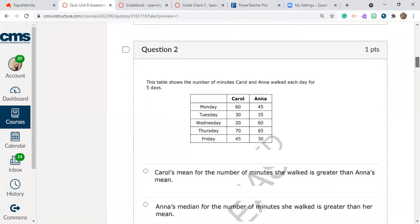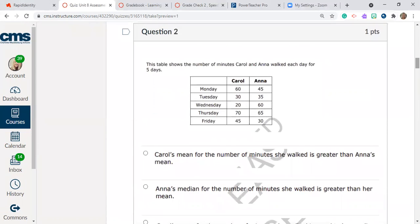Question number two. This table shows the number of minutes Carol and Anna walked each day for five days. So we have the days of the week and then we have how far Carol walked, or I'm sorry, the number of minutes they walked. So Carol walked 60 minutes on Monday and Anna walked 45 minutes on Monday. On Tuesday Carol walked 30 minutes, Anna walked 35.